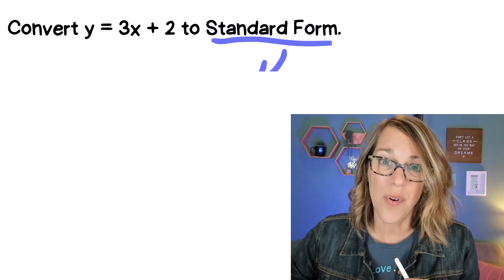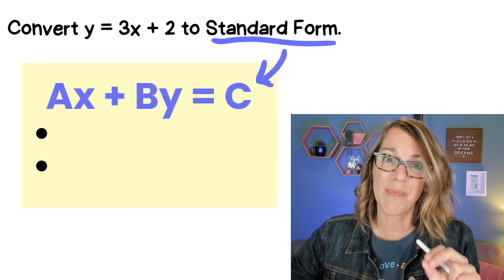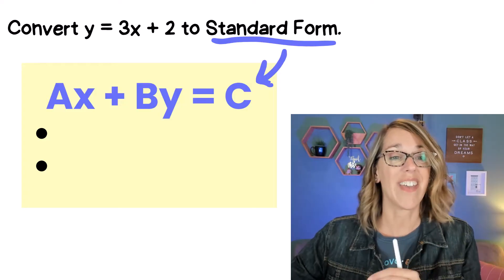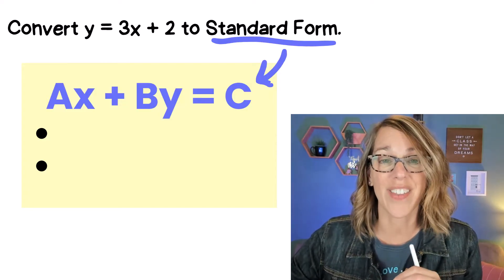To get this equation into standard form, we need the x term and the y term on one side and that constant, in this case it's 2, on the other side.